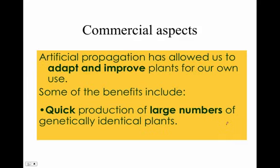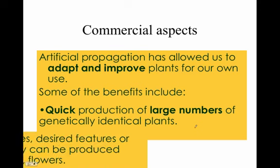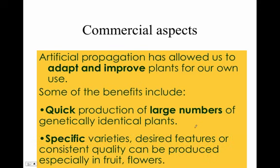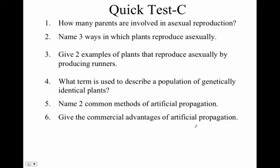Seed trees have highly variable fruit quality. Artificial propagation allows us to adapt and improve plants for our own uses — quick reproduction, large numbers, and you can get certain varieties.